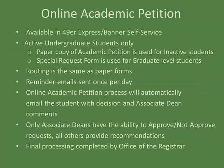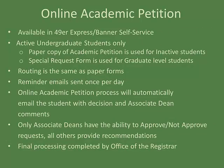The online academic petition system is available in 49er Express through Banner Self Service, and is available for all active undergraduate students. The routing is the same as the paper forms, but routed through an online process. Reminder emails are sent once per day. The online academic petition process will automatically email the student with any decisions as well as any Associate Dean comments. Only Associate Deans have the ability to approve or not approve requests; all others provide recommendations. Any final processing of the petition is completed by the Office of the Registrar.